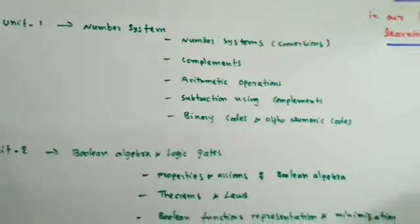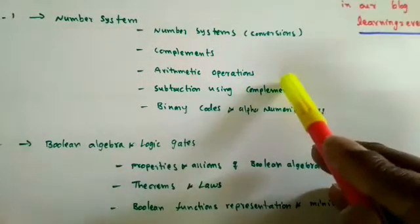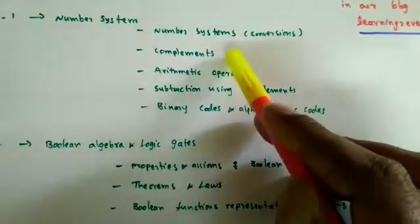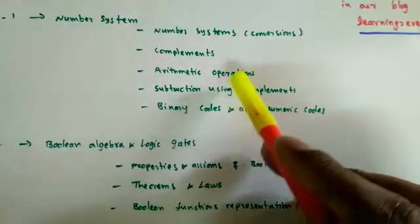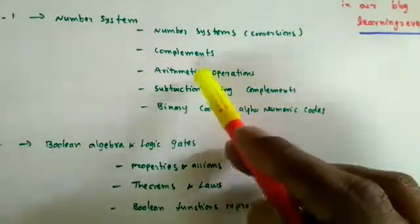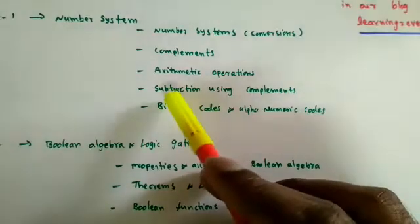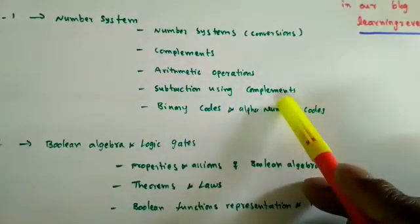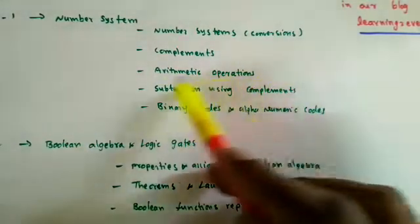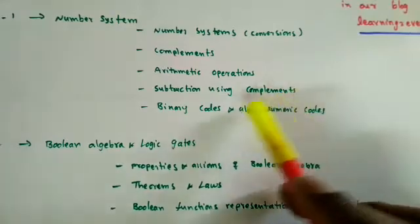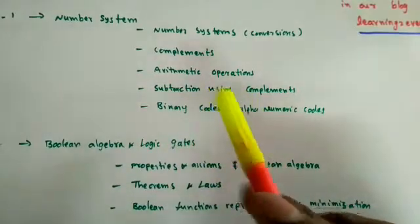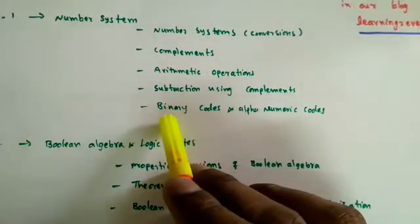We also discussed arithmetic operations — addition and subtraction in binary, decimal, octal, and hexadecimal. Subtraction using complements was covered: using one's complement or two's complement, the subtraction becomes addition again.